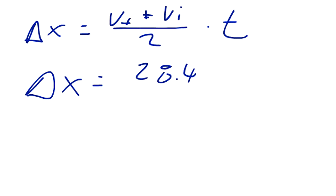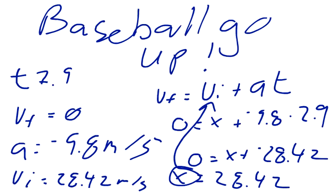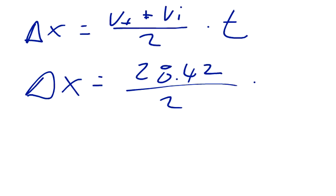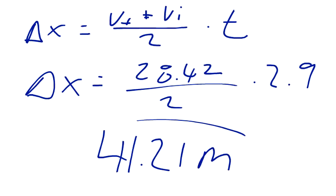28.42 plus zero is 28.42. Divide that by two, times that by the time, which is 2.9. That should give you the displacement of 28.42 over 2 times 2.9, which equals 41.21 meters. That's it.